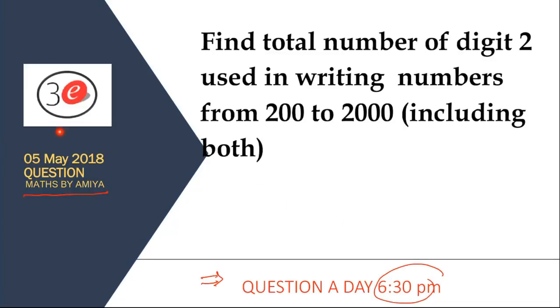The 5th May 2018 question is: find total number of digit 2 used in writing numbers from 200 to 2000, including both of them. It means how many times will I use digit 2 if I write all numbers from 200 to 2000, including both.